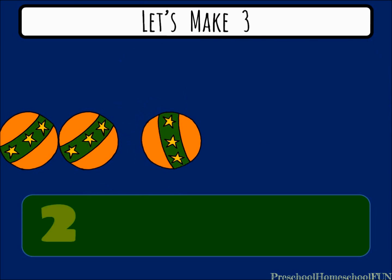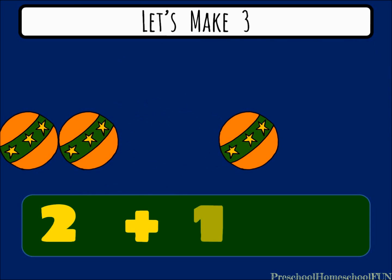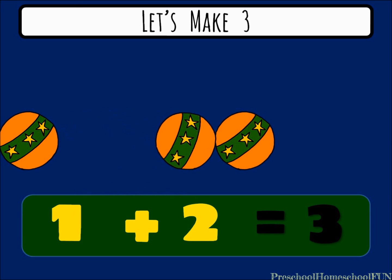Now, if one ball rolls off to the right, we have 2 plus 1 equals 3. And we can switch those numbers a little and say now 1 plus 2 equals 3.